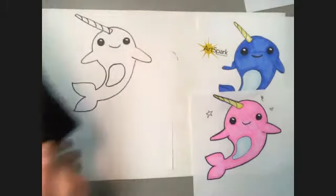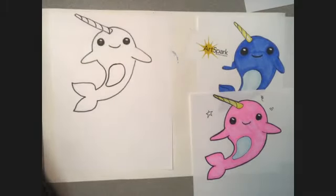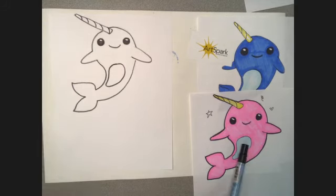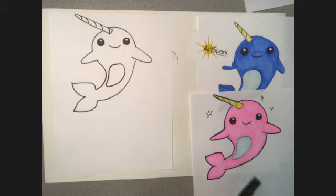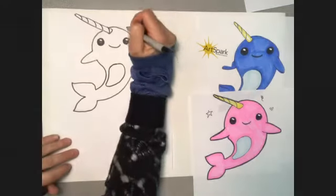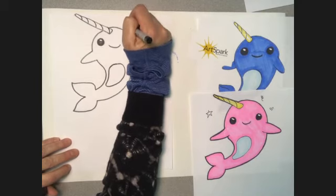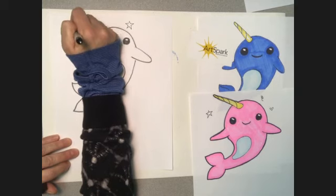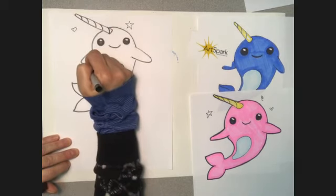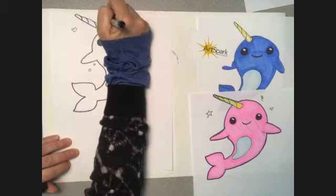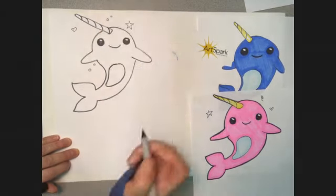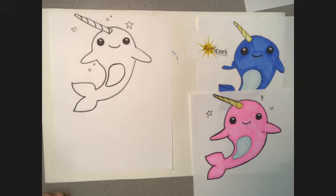You can color your narwhal whatever colors you have, whatever markers you have. I would do your lighter colors first, like I did this light blue for the belly and the yellow for the horn. And then the other thing that always looks cute with kawaii drawings is drawing some little shapes in the background. You don't have to do this, but a lot of people like to do little designs around, and it really makes your narwhal look cute.